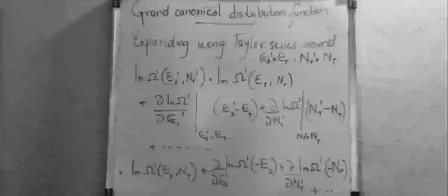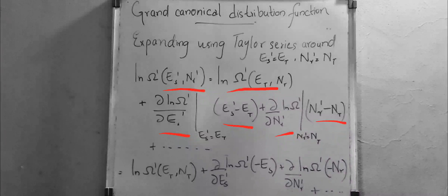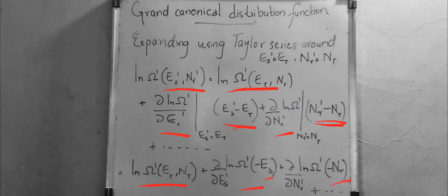So log Ω'(E_S', N_R') equals log Ω'(E_T, N_T) plus (∂/∂E_S') log Ω' evaluated at E_S'=E_T multiplied by (E_S' - E_T) plus (∂/∂N_R') log Ω' multiplied by (N_R' - N_T) plus higher order terms. Since E_S' - E_T equals -E_S and N_R' - N_T equals -N_R, these substitutions are made.